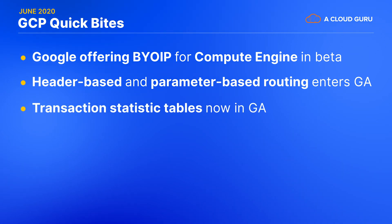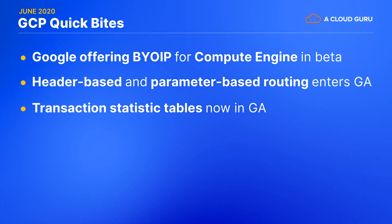Transaction Statistic Tables, a new feature for Cloud Spanner which helps investigate performance issues, is now in general availability. This feature can help you discover potential bottlenecks that are impacting latency in your database.